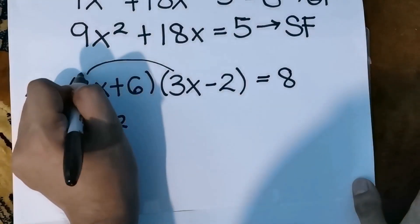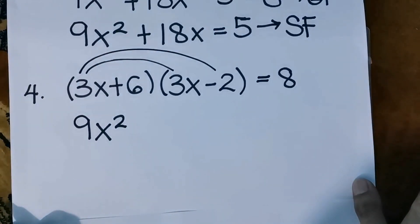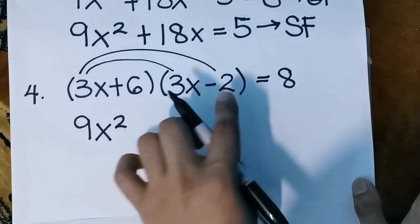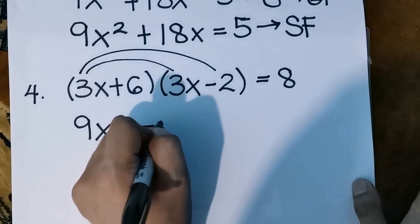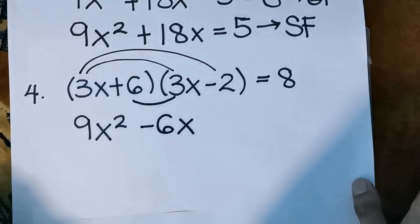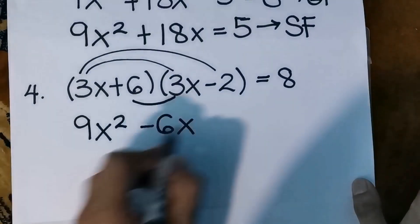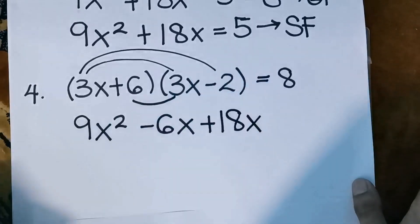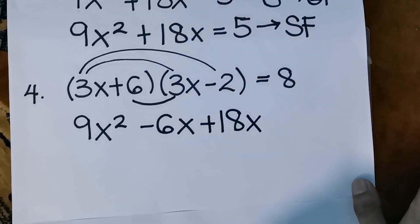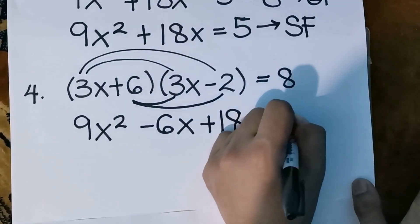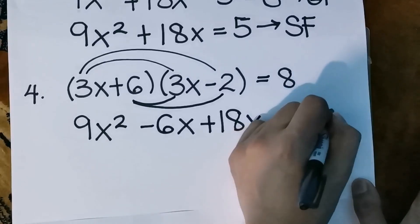Outer terms: 3x times negative 2 gives negative 6x. Inner terms: 6 times 3x gives positive 18x. Last terms: 6 times negative 2 gives negative 12. So we have 9x squared minus 6x plus 18x minus 12 equals 8.